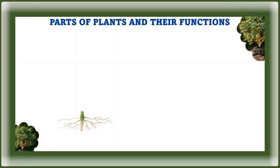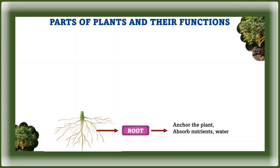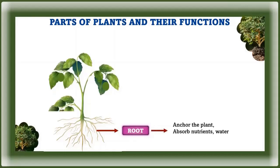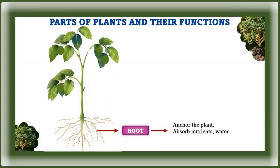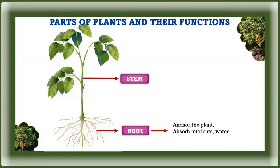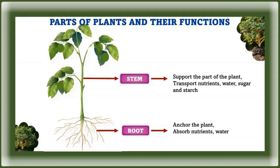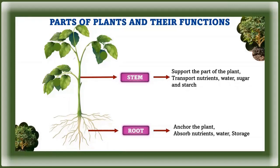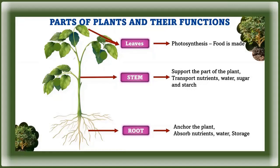Roots anchor the plant in the soil and absorb nutrition and water needed by the rest of the plant. The stem supports the upper part of the plant and acts as a transport system for nutrition, water, sugar, and starches.